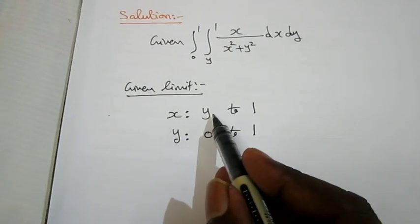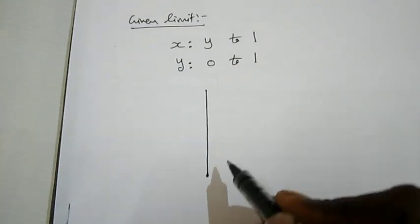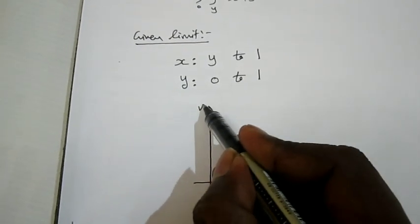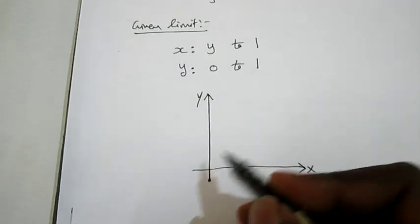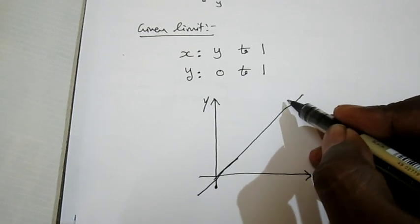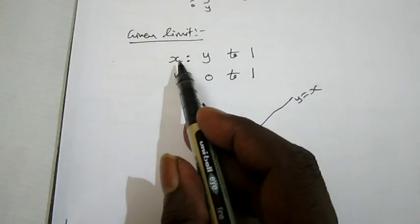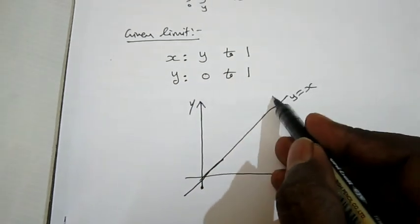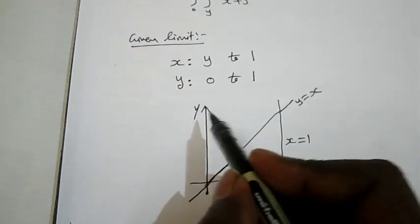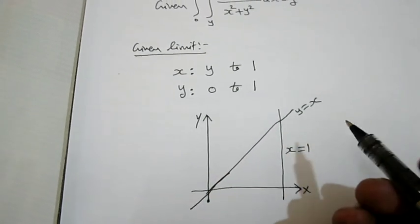Now I am going to find the diagram. The equation x equals y is a straight line. Taking the x-axis and y-axis, the equation x equals y is a straight line passing through the origin. So this is y equal to x, and this is x equal to 1, and this is also y equal to 1.